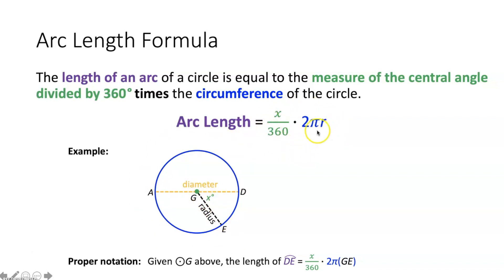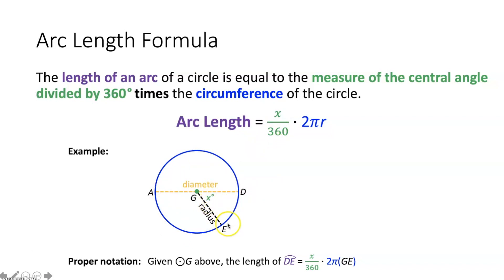Where did this formula come from? If you just want a fraction of the circumference, you take the circumference and multiply it by a fraction. That fraction is whatever portion of 360 that this arc represents — that number over 360. So it's giving you a fraction of the circumference.